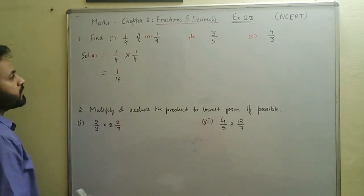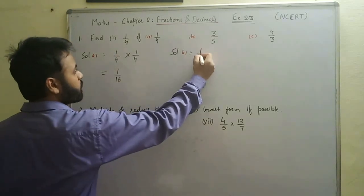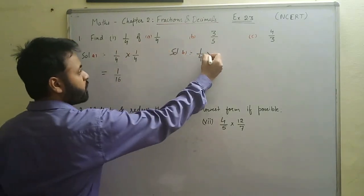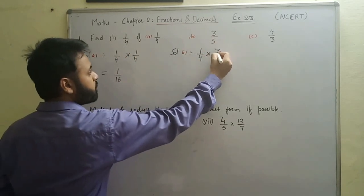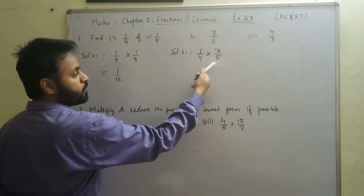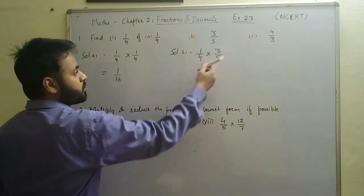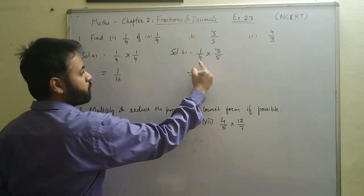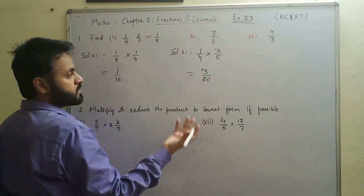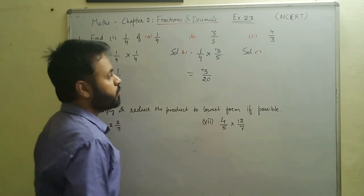In part b, we have to find one fourth of three by five. We write one fourth, replace 'of' with multiply, and write three by five as it is. In these two fractions we cannot cancel out anything, so one times three gives three and four times five gives twenty. The answer is three by twenty.